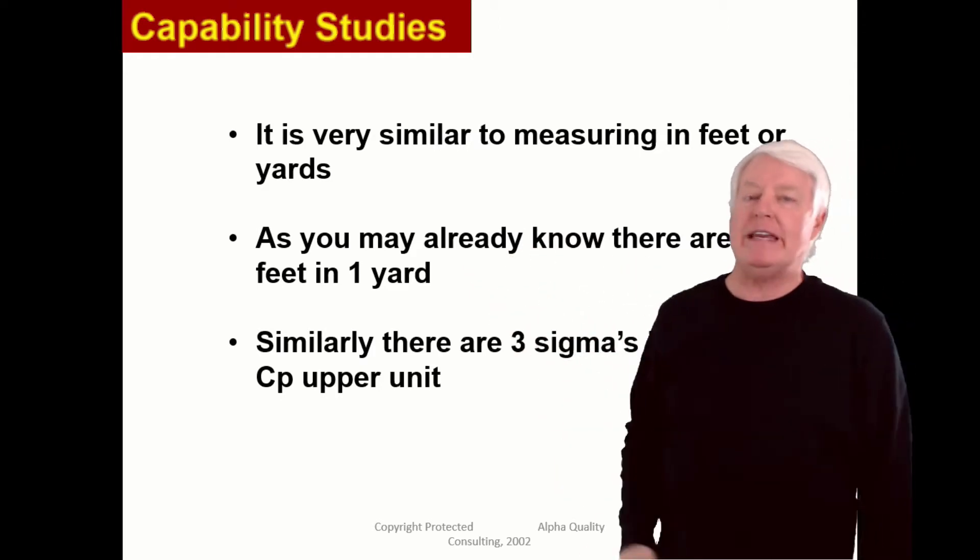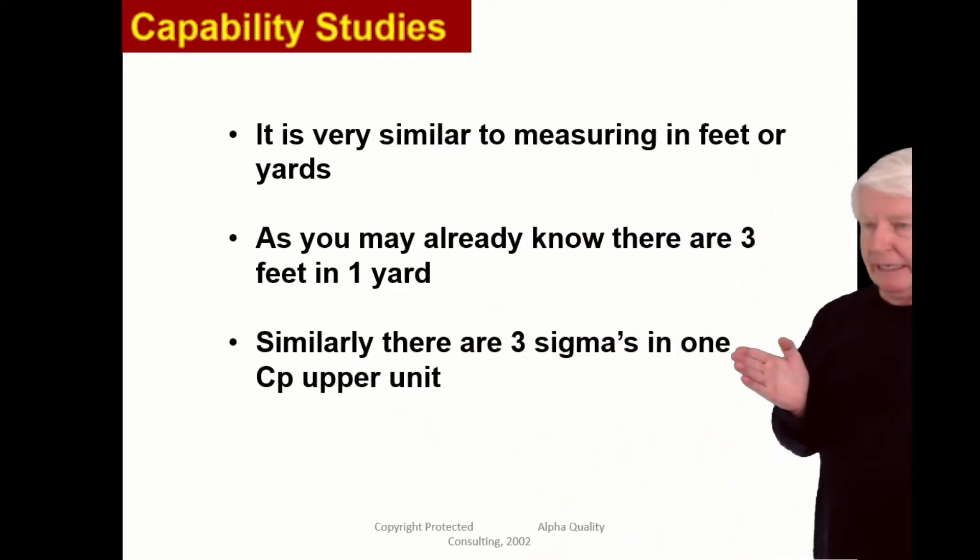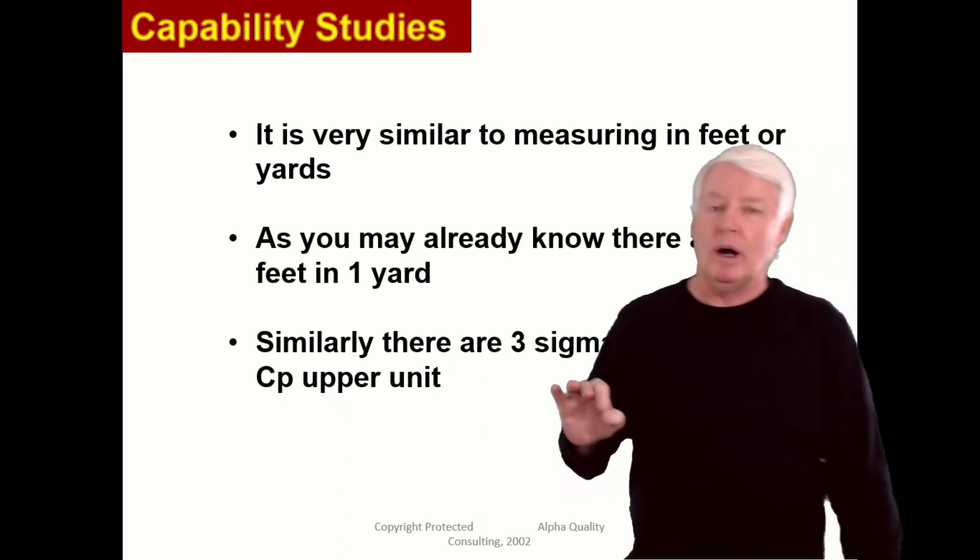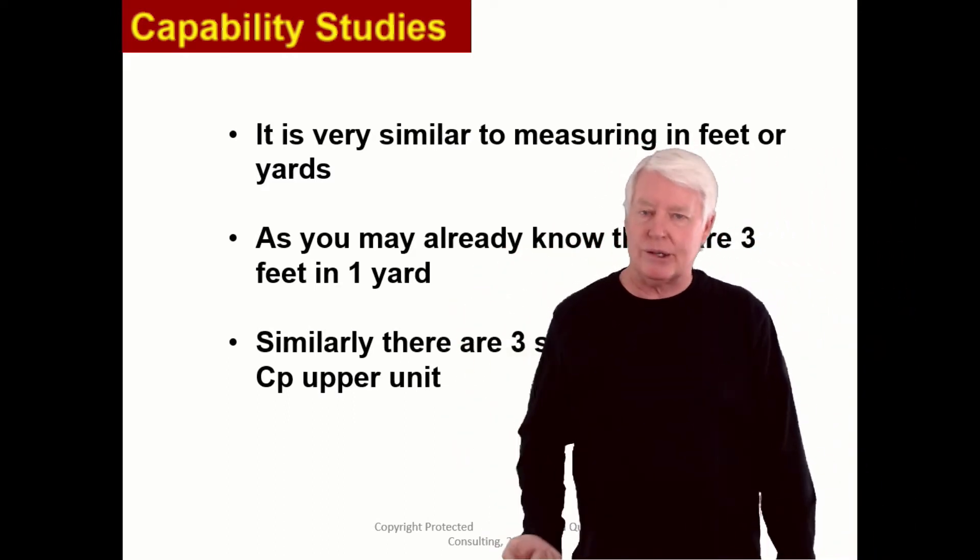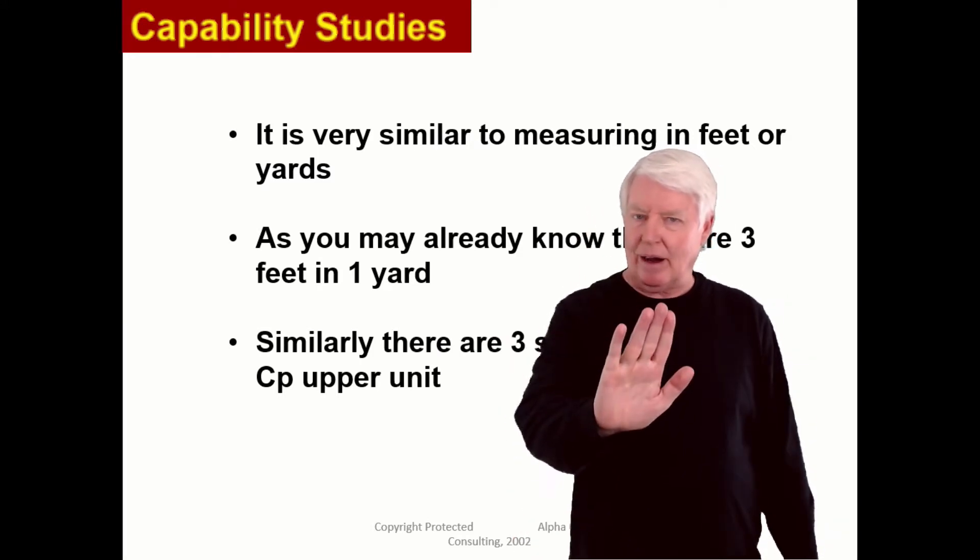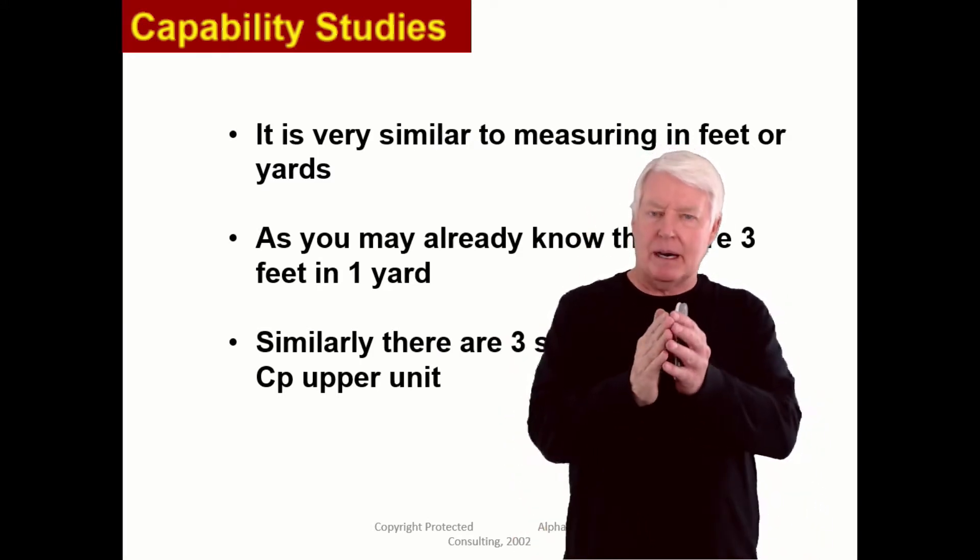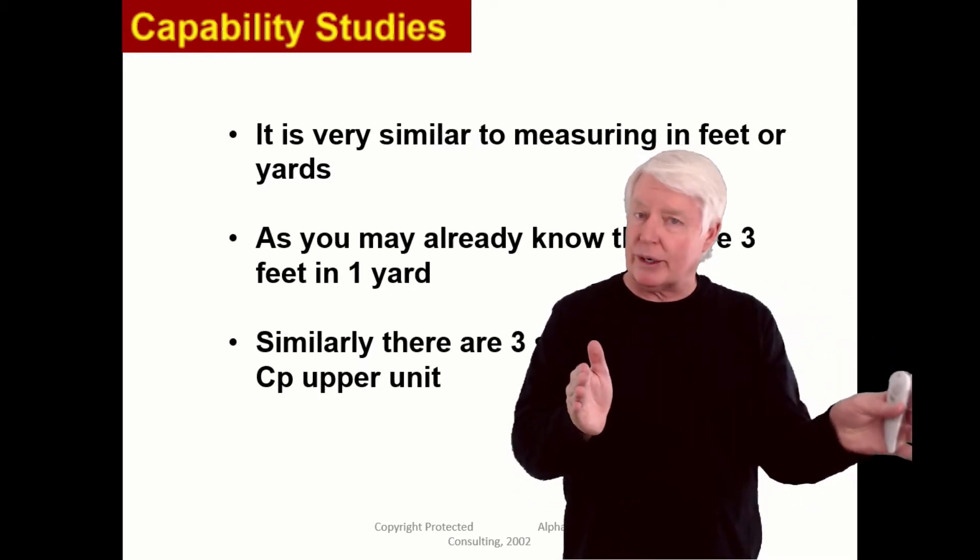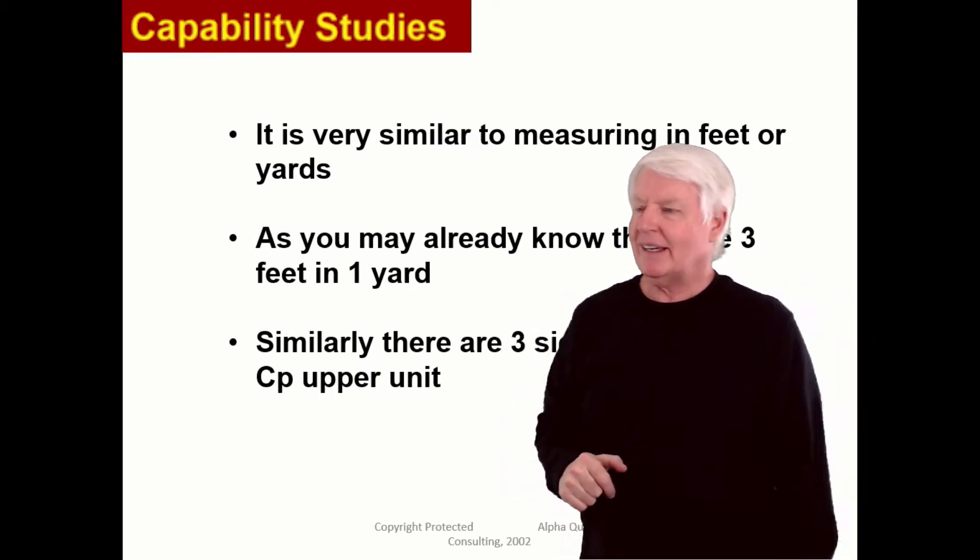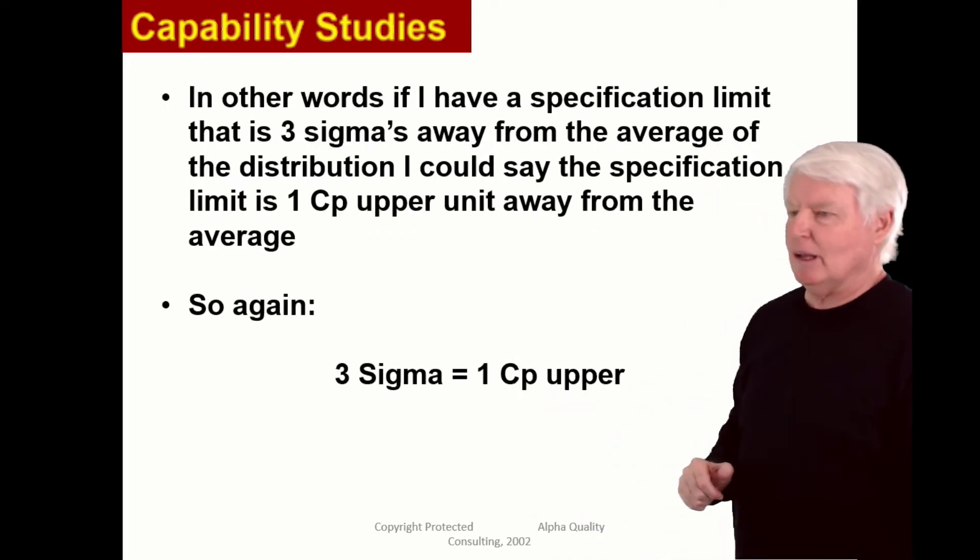As you may already know, there are three feet in one yard. Similarly, there are three sigmas in one CP unit. Whether you're talking about CP upper, CP lower, CPK, or CP, that's what they all mean, the number of three sigma units. We're measuring not in sigma units now. We're measuring in three sigma units. That's what CPK is all about.